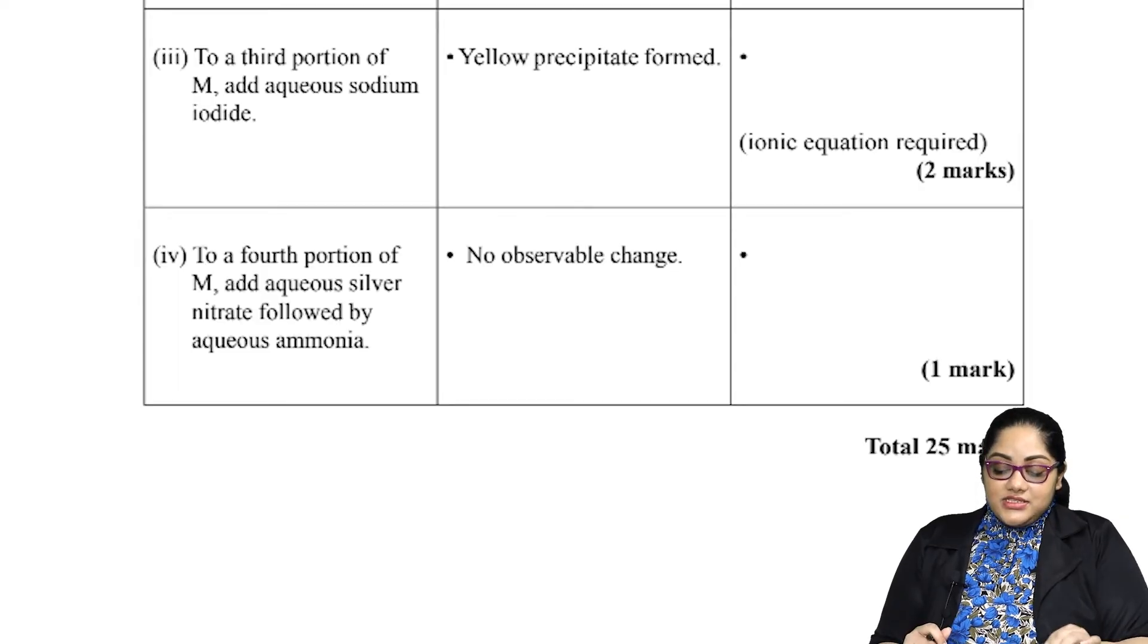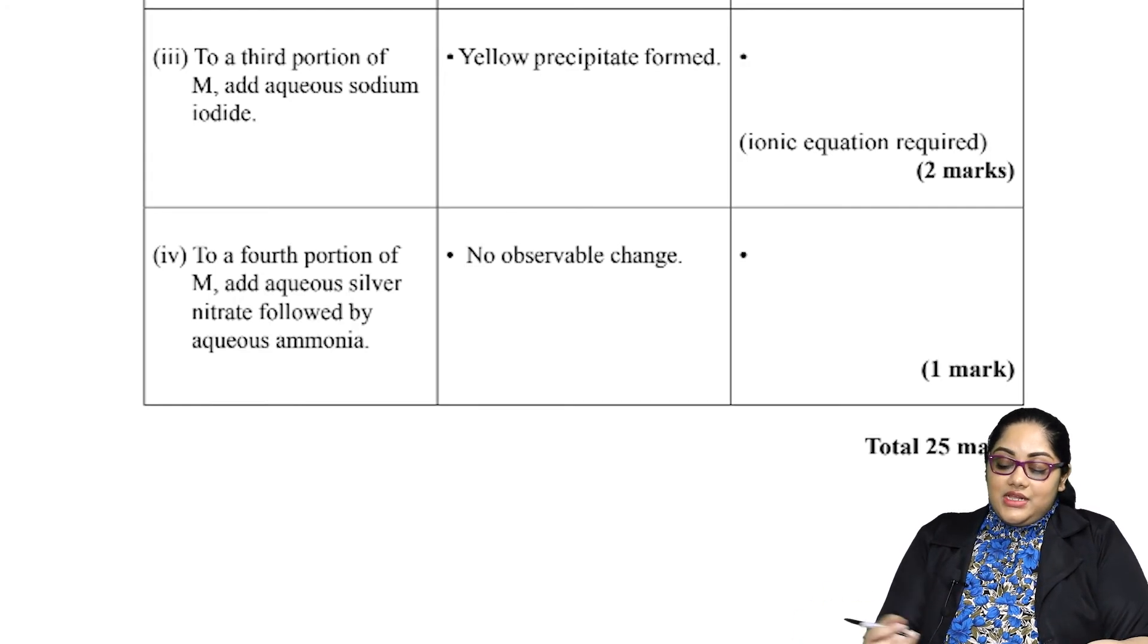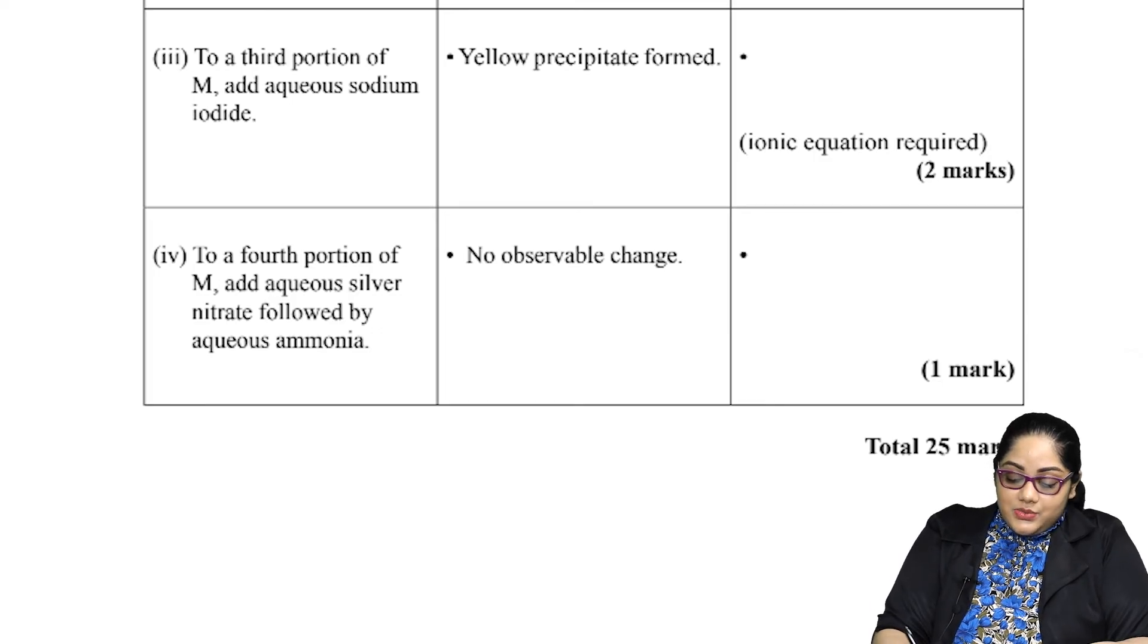In the last part, to the fourth portion of M, we are adding aqueous silver nitrate, followed by aqueous ammonia. This is to test if we have any halogen ions present. And because we have no observable change, we can just say that no halogen ions were present.